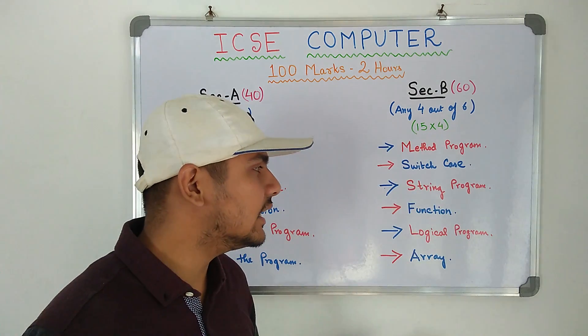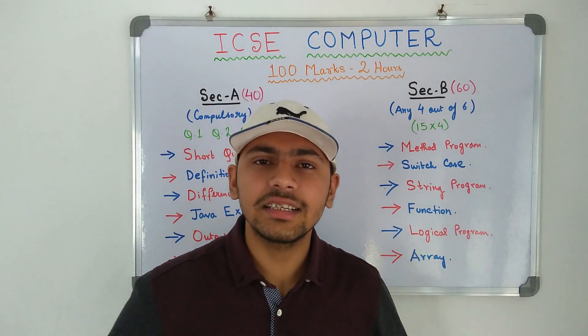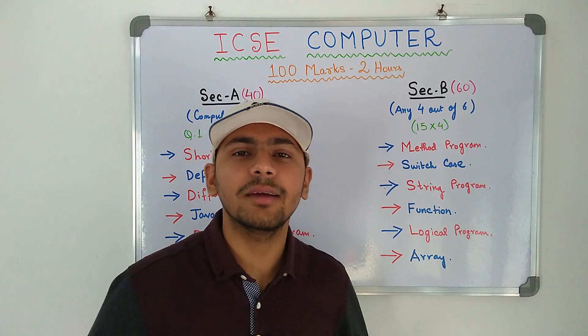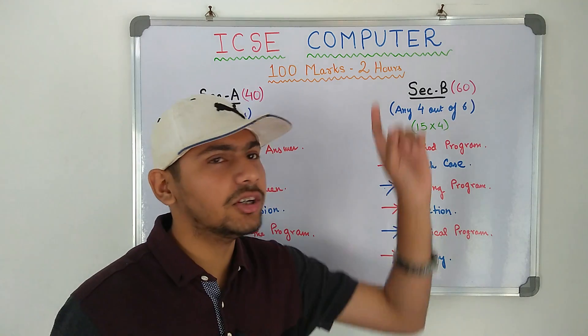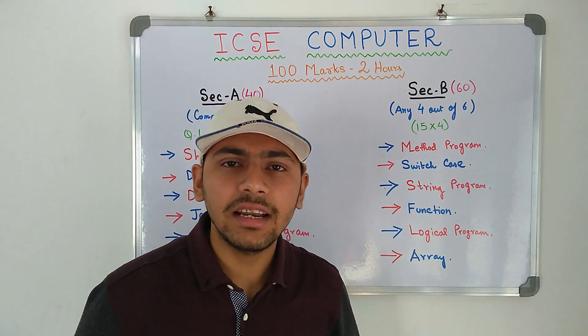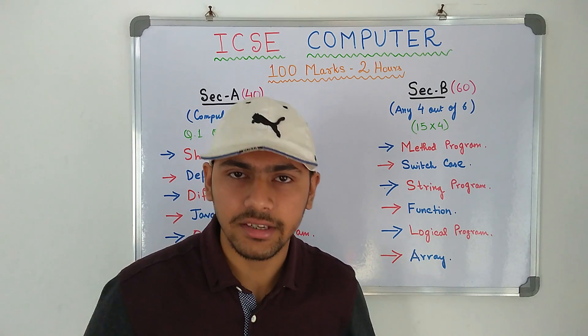So that was regarding the programs that come. We have already solved the section B of ICSE 2018 computer applications paper. The link will be in the top right corner. Do watch that and you will understand whatever programs are asked.